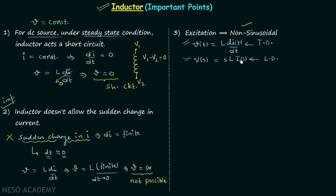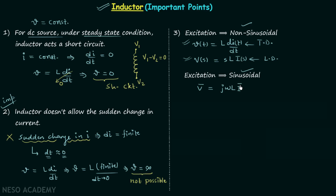Whenever the excitation is sinusoidal, we perform the analysis in the phasor domain. In the phasor domain, V phasor equals jωL times I phasor. While solving questions, we will see the use of all these relationships.